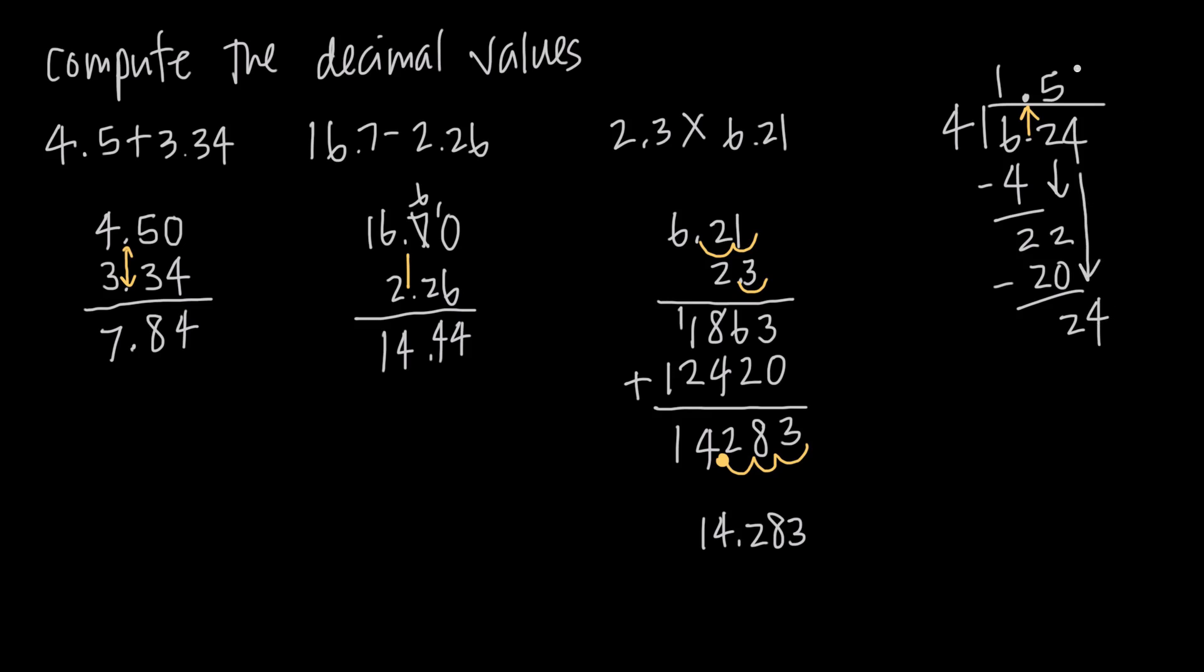And then we bring down our 4 to get 24. 4 goes into 24 six times. 6 times 4 is 24. When I subtract, I get 0. So my remainder is 0. And my answer then is 1.56 because we just moved that decimal directly up from where it was here in the dividend. And it stays there in our final answer.